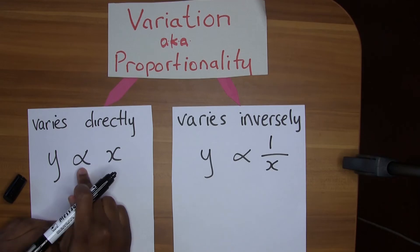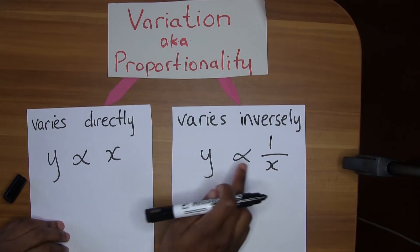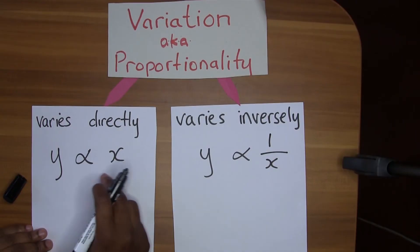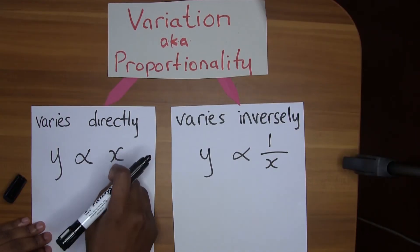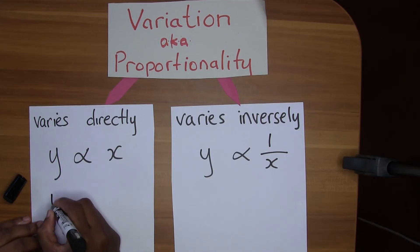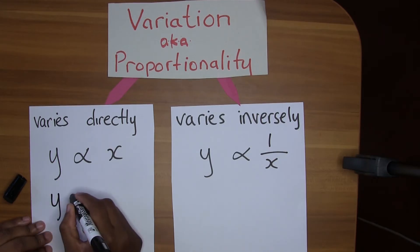Have we ever solved any equations with this proportionality sign? No — to solve equations we need an equal sign. Hint: equation equals equal. So to get an equal sign we need to introduce something called the constant of variation.